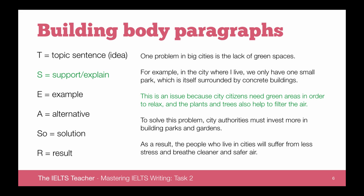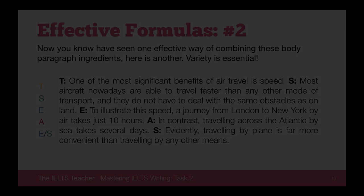As this is a problem and solution paragraph, we need to follow this with a solution: 'To solve this problem, city authorities must invest more in building parks and gardens.' Then we add the result of that solution. It's often nice to finish a paragraph with a result because the result will link itself back to the first sentence, creating a very clear central topic — really important for coherence and cohesion if you want to score band 7 or above. 'As a result, the people who live in cities will suffer from less stress and breathe cleaner and safer air.' As I said, we can do these in any sort of order.